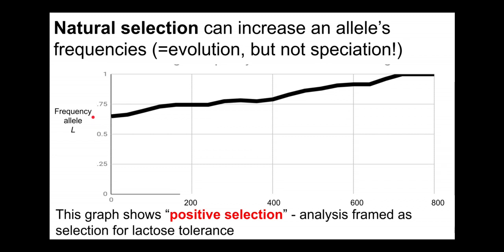Terminology related to patterns of evolution requires attention to context — it will often depend on what allele we are focused on and how we are framing the analysis. In this case we're showing an increase in the big L allele, which is associated with higher fitness, so we think of this as positive selection. The opposite is also called negative selection, and the same pattern could be referred to as negative selection if we slightly changed our framing.